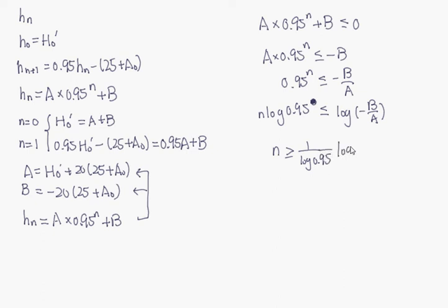Because n must be an integer, we will have solved n is the ceiling function of 1 over log 0.95 times log minus B over A.